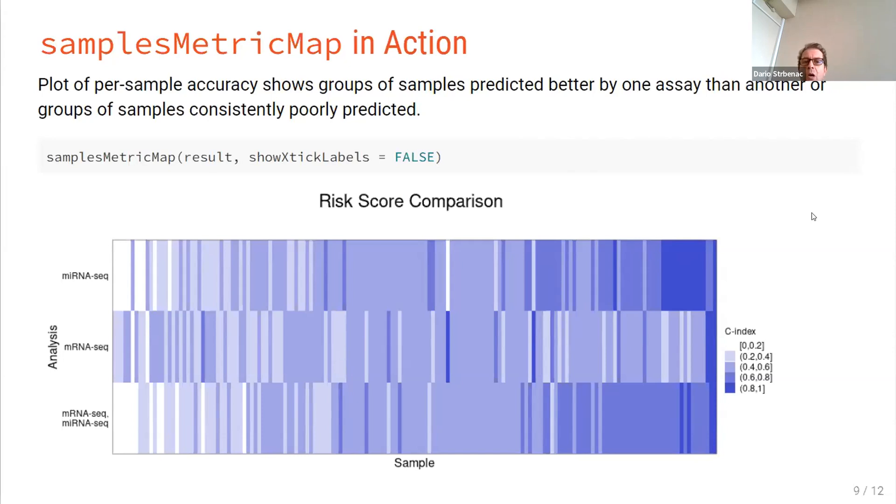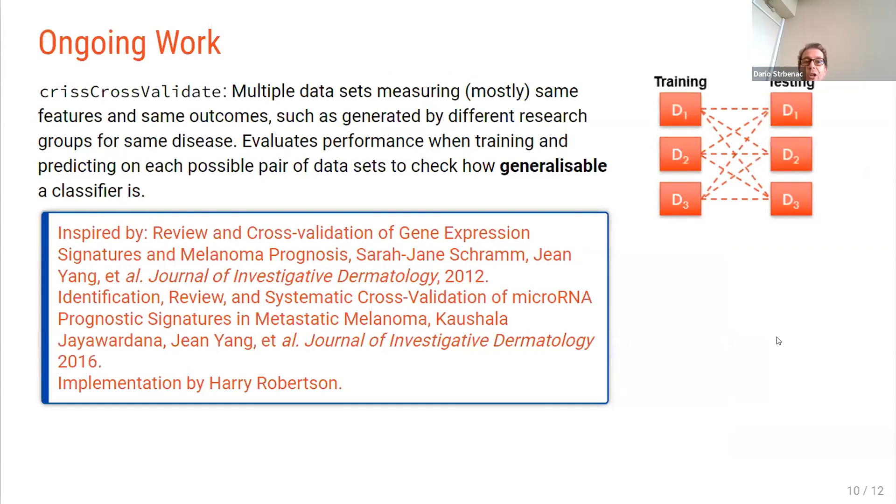Lastly, I would like to tell you about samplesMetricMap. So once we've got some metrics, we might want to know which samples are consistently being predicted well and which samples are being predicted inaccurately. So on the x axis here, we've got samples and on the y axis here, we've got the assays. And I've just used showXAxisLabel is false because we don't want to plot 160 sample labels along the x axis. And we can see a group of samples here on the left side of the plot, which have quite a high C-index. Whereas when they're predicted by the micro RNA, they're not so well predicted. And similarly, on the right side of plot here, we've got samples which are better predicted by the microRNA-seq data, but not so well by the messenger RNA-seq data.